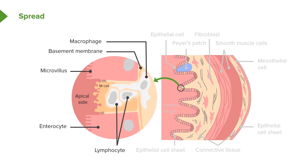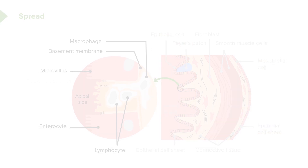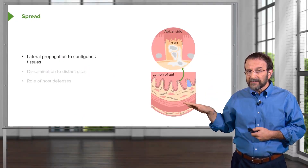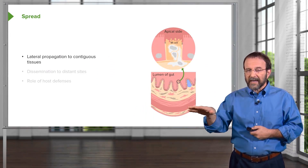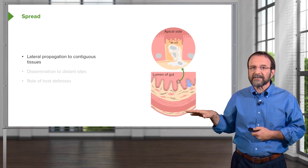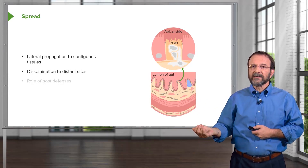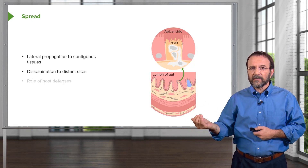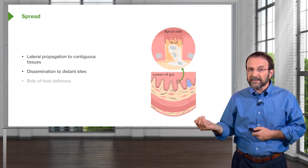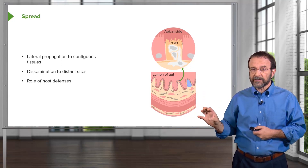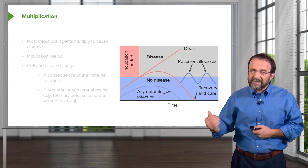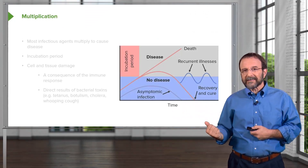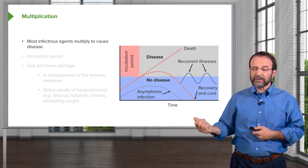Once a bacterium has adhered to the epithelium, it can move laterally, reproduce, and spread to contiguous tissues. Or it can penetrate the epithelial sheet and disseminate to distant sites. Our immune defenses play a big role in limiting such incursions, but they don't always win, and bacteria do enter the rest of our body. Once bacteria are inside us, they typically multiply in order to cause disease.